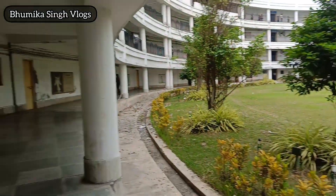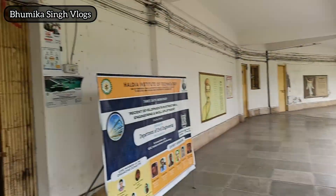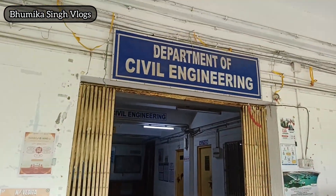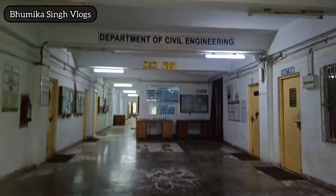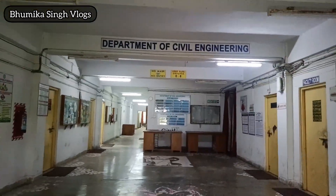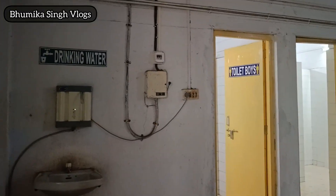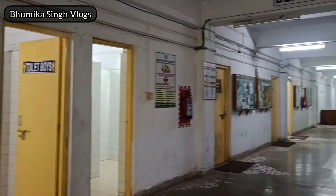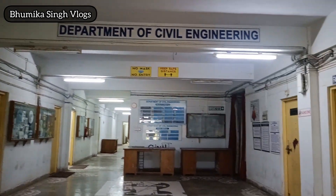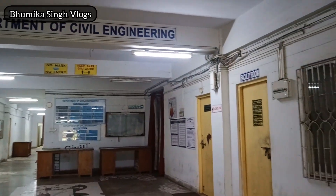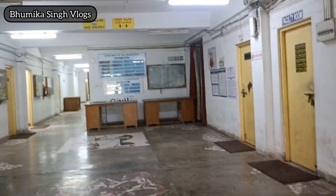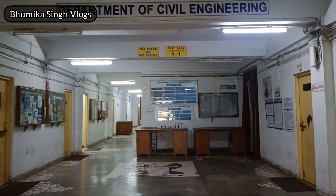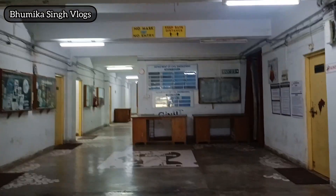This is the main building of our college. The civil engineering department is located on the ground floor and at the second floor also. To my left you can see the toilets for boys and girls, and to my right is the faculty room. These are some cement bags that we have at our college for doing various experiments.